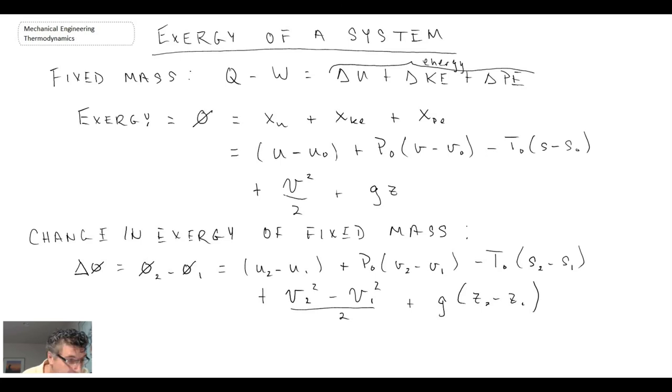We can also have on a per mass basis. Delta capital X would then be equal to the mass times our delta phi, or the change in exergy.